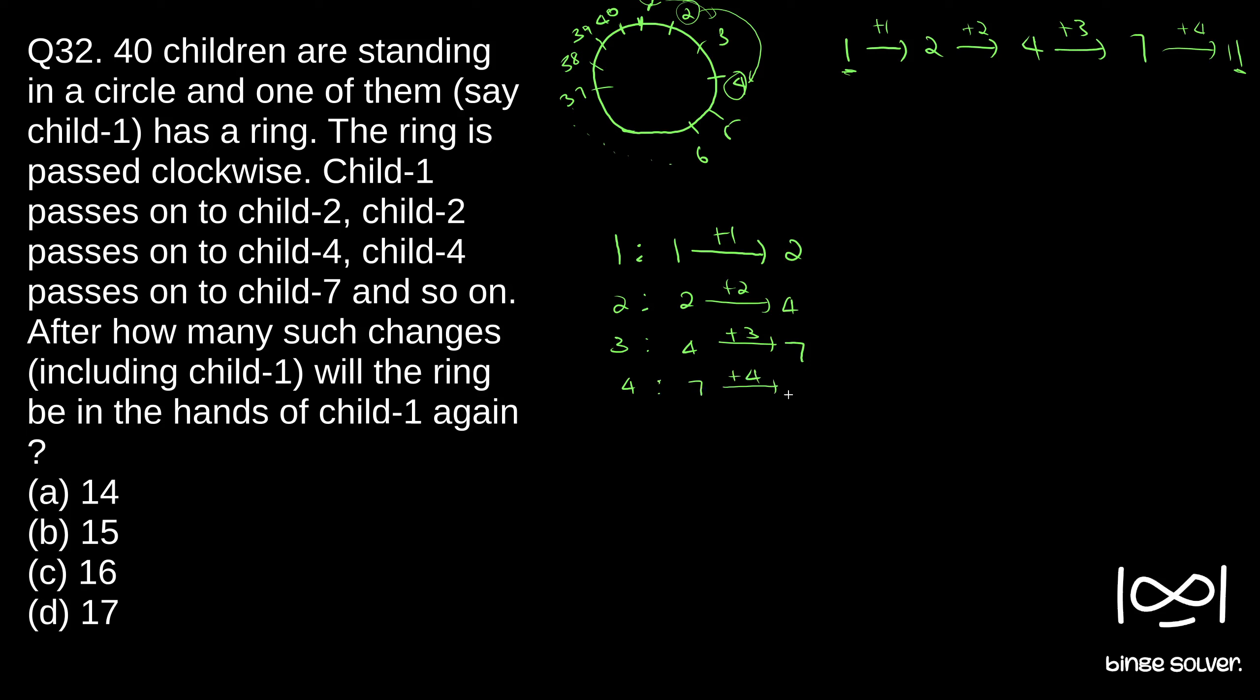Plus 4, this is 11. In the fifth pass we have 11. So as you can see, the options are 14, 15, 16, 17, so it will take at least 14 passes, so we will have to write 14 cases. So we can write: pass 5, 15. Pass 6, 22. Pass 7, 22 plus 7, 29.